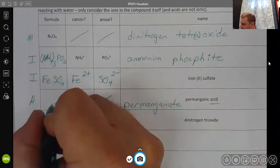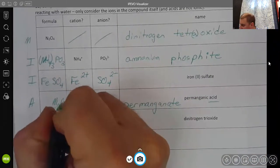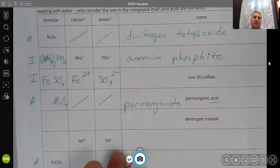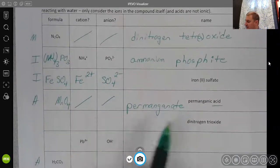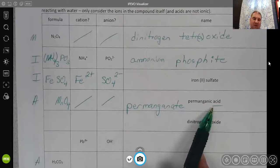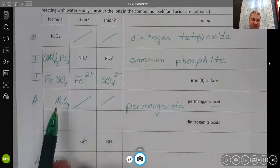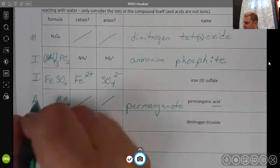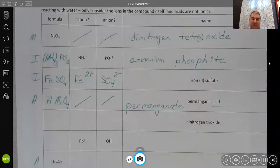And the permanganate ion would be MnO4 with a 1 minus charge. For this to be an acid, it's going to have a hydrogen bonded to it, because permanganate has a 1 minus charge, we would only put 1H with this to make it into an acid, and that would be balanced.